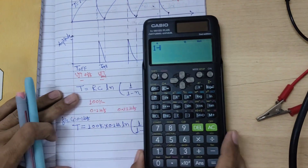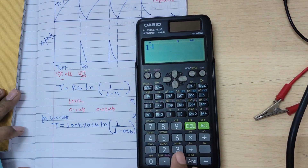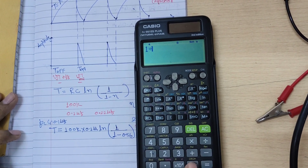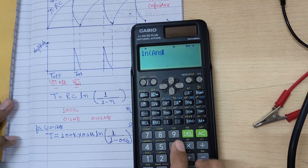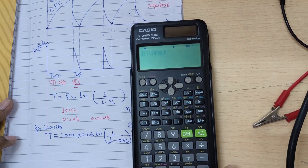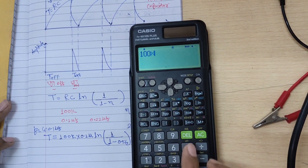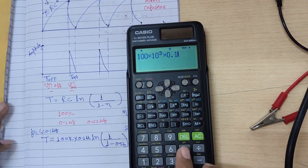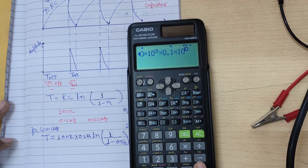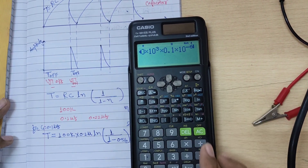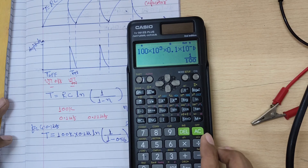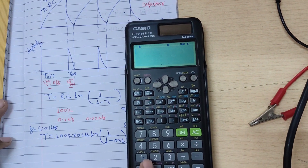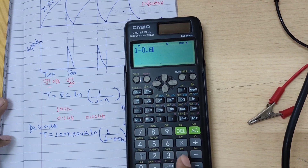So: 1 minus 0.56, then 1 divided by the answer, then natural log of the answer, then multiplied by 100 kilo ohms into 0.1 micro farad. Let me do this calculation.